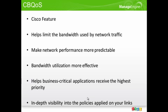CBQoS, or Class-Based Quality of Service, is a Cisco feature. It provides information about QoS policies applied and class-based traffic patterns within an enterprise network. As a network administrator, your top priority will be to ensure that business-critical applications get the optimum priority.